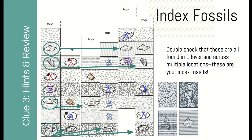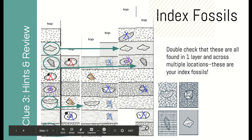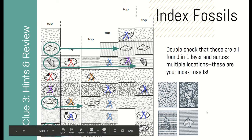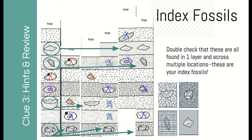Also cross out anything only found in one location — all of the ones in pink. They were only found once in the fossil record in one specific location; same with this one, nowhere else in the world. You really want something common, found across multiple locations, that only lived for a short period of time. Once you do that, you're left with these. This fossil only lived in one layer and across multiple locations — that's an index fossil. Same with the trilobites at the bottom; they were found across multiple locations. Trilobites are one of the most well-known index fossils because they were so commonplace around the world. Those are your four index fossils.